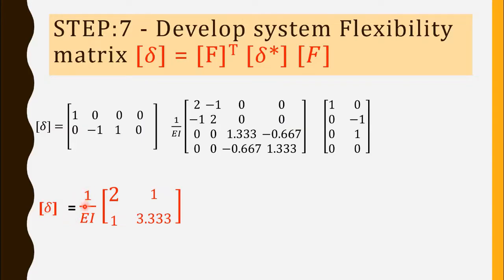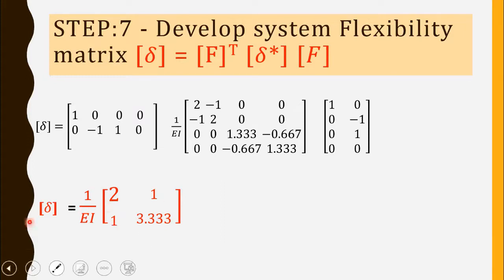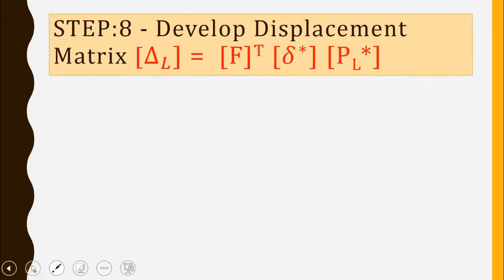After multiplying all the matrices, the system flexibility matrix is (1/EI) times [2, 1; 1, 3.33]. Please don't skip these steps — you must do the multiplication manually so you can do it in an exam. Verify your answer matches this result.